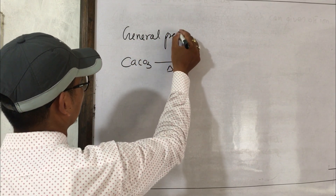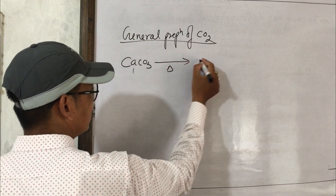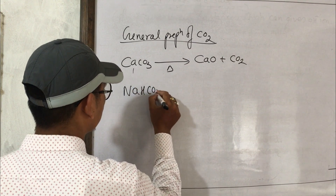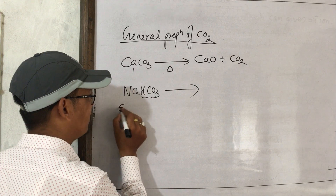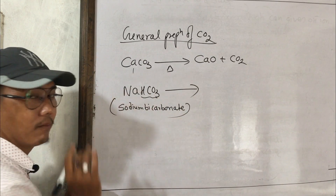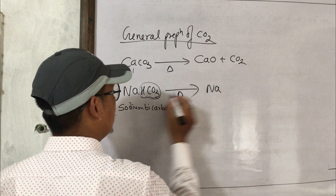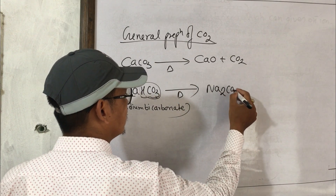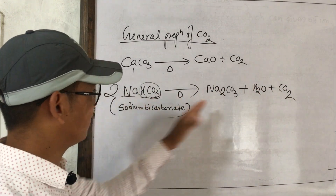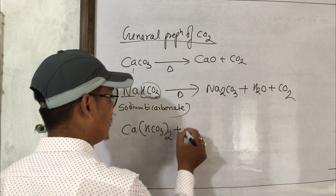For general preparation of CO₂ gas, carbonate is made with metal oxide giving CO plus CO₂. We also have NaHCO₃ — sodium bicarbonate — and CaHCO₃ — calcium bicarbonate. These bicarbonates can also be used in CO₂ preparation.